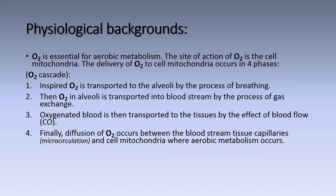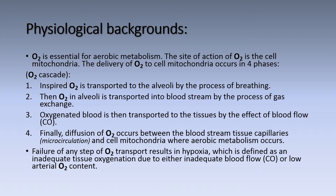Finally, diffusion of oxygen occurs between the bloodstream, tissue capillaries — which is the microcirculation — and the cell mitochondria, where aerobic metabolism occurs. Failure of any step of oxygen transport results in hypoxia, which is defined as inadequate tissue oxygenation due to either inadequate blood flow, i.e. cardiac output, or low arterial oxygen content.